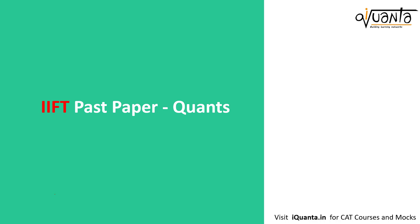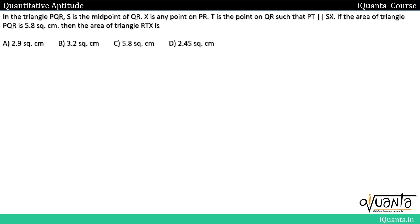Hello everyone. We will be solving a quants question from IFT 2018 in this video. The question is: in triangle PQR, S is the midpoint of QR. X is any point on PR, then T is the point on QR such that PT is parallel to SX. If the area of triangle PQR is 5.8 cm², then find the area of triangle RTX.